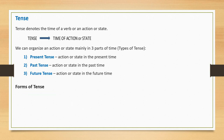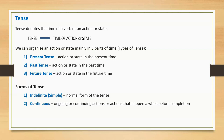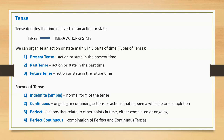There are four forms of tense: indefinite, continuous, perfect, and perfect continuous.